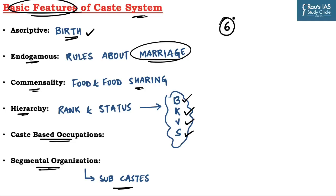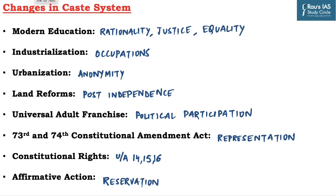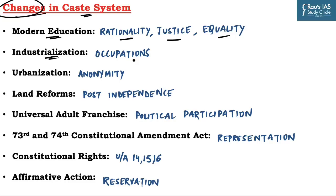We have discussed the six features associated with caste system. Now we will see the changes in the caste system. Traditionally, the nature of caste system has undergone significant changes in modern-day society, and many features have been diluted to some extent due to new developments. The first one is modern education, which instills rationality, justice and equality among common people, which further reduces the impact of caste system on Indian society.